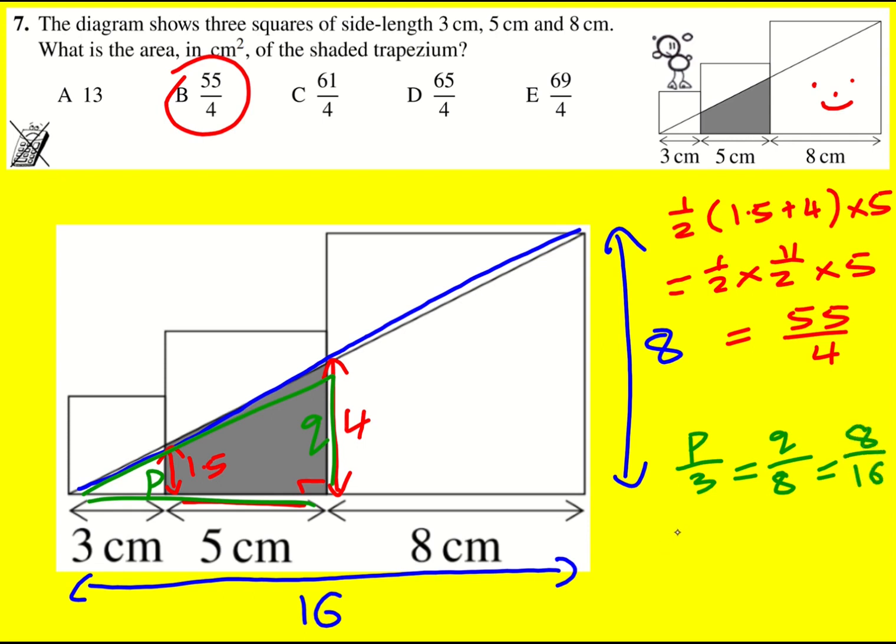From that, you can work out that P - this is going to be a half, therefore P is 1.5, and Q is 4.